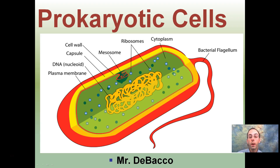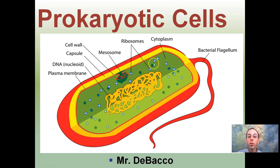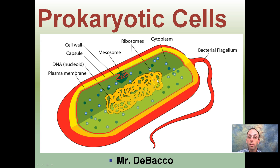Here we're going to talk about prokaryotic cells, which are very simple cells. Notice on the inside, not very complex structures — kind of a mess of DNA located in the middle, no membrane-bound organelles, no high degree of organization. So these are considered very basic or primitive cells.